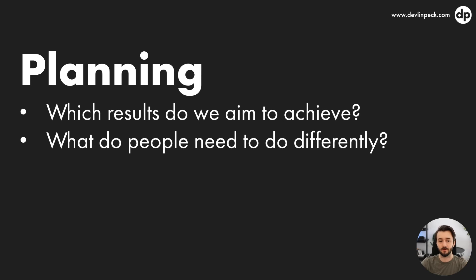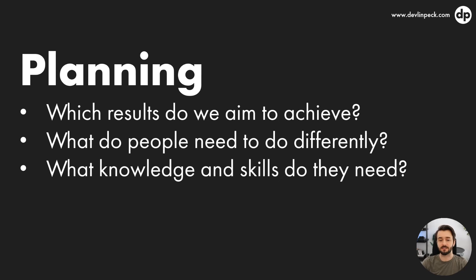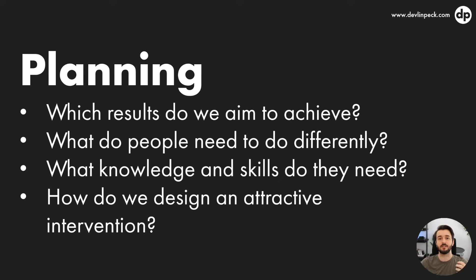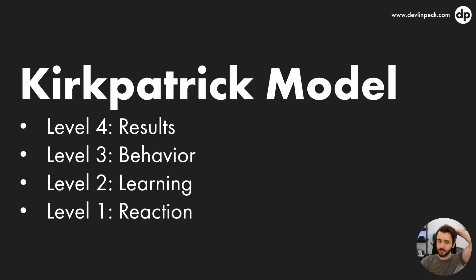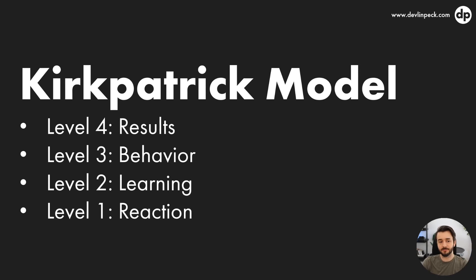We're working our way backwards through the levels to plan our learning program. Next, ask: what knowledge and skills do these people need to do things differently? That moves us into level two. Finally, how do we design an attractive intervention so that people want to engage with it and acquire those knowledge and skills? You want to start with level four when planning — starting with 'how do I design something people like' is a counterproductive approach when we're actually trying to produce results for an organization.